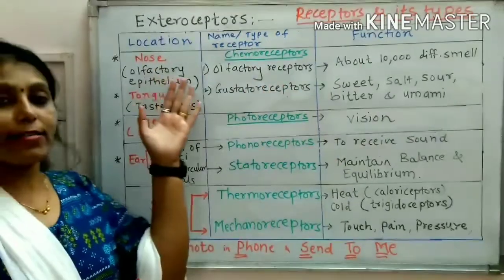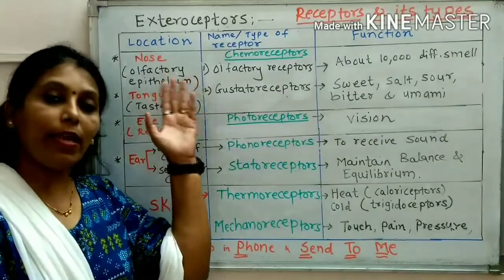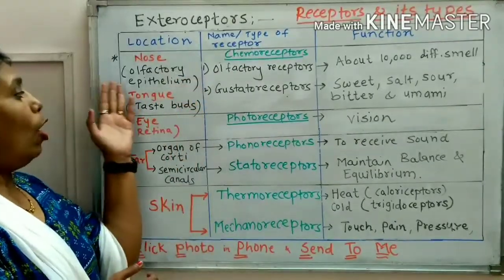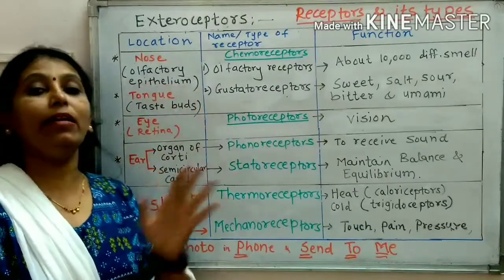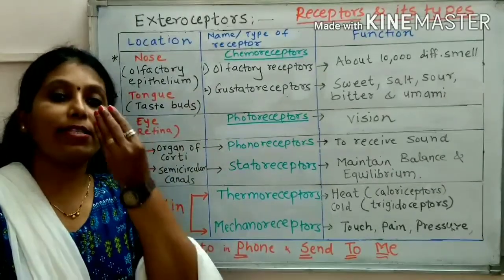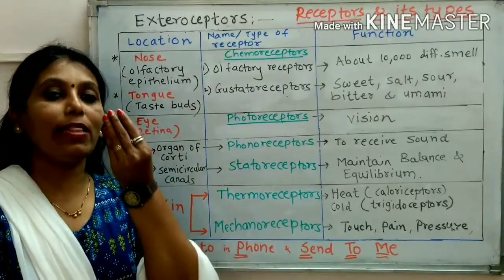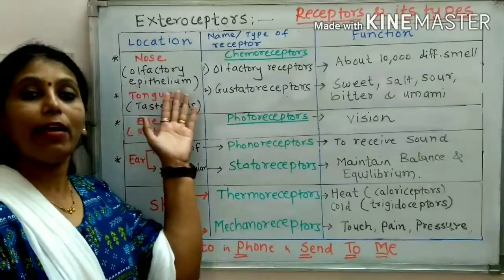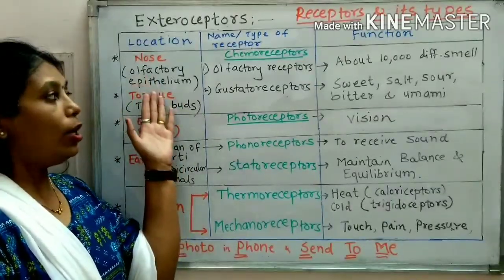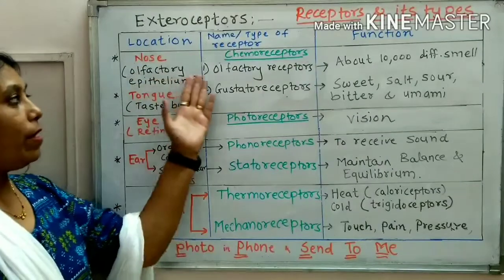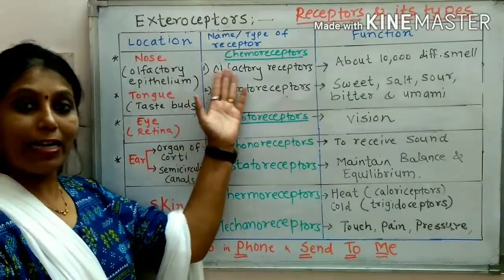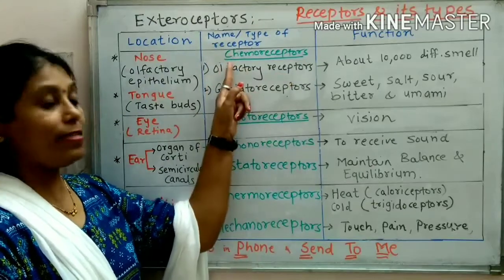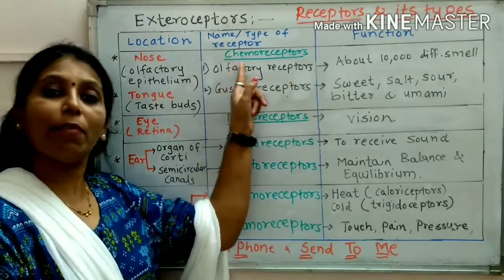Let us come to nose. Inside the nose it is called as olfactory epithelium — that is the location. The receptors which are present in the nose are called as olfactory receptors. The name of the receptor type is chemoreceptors.